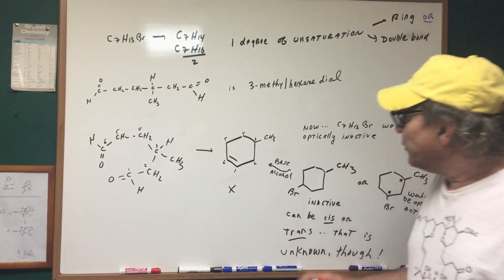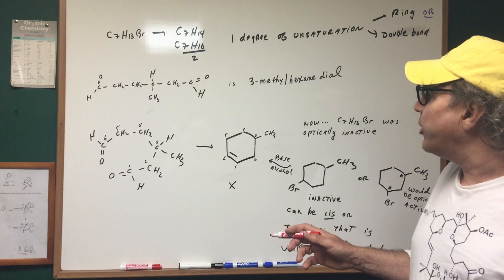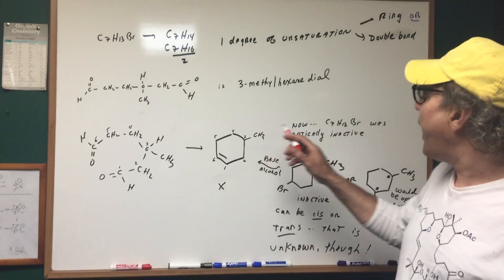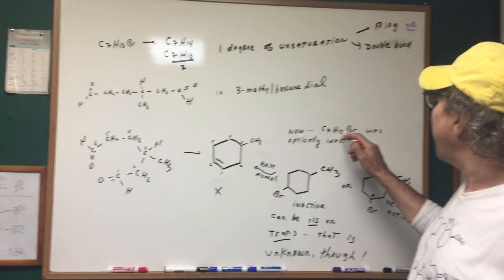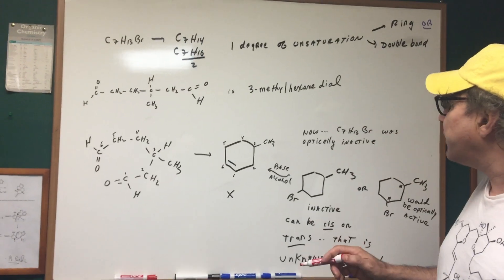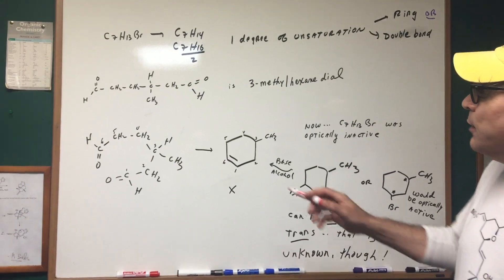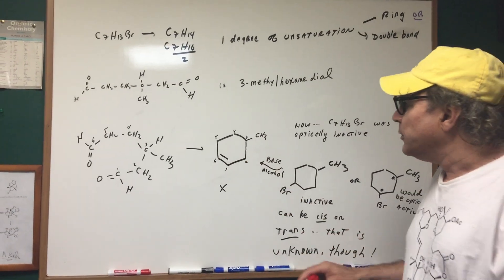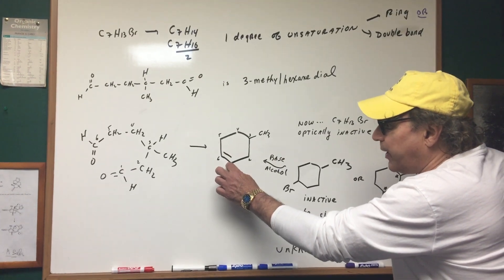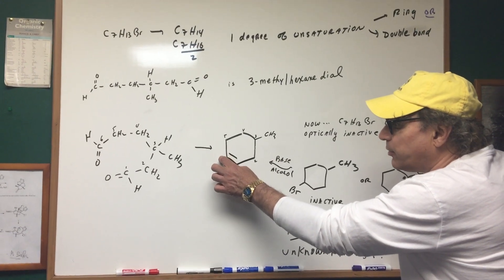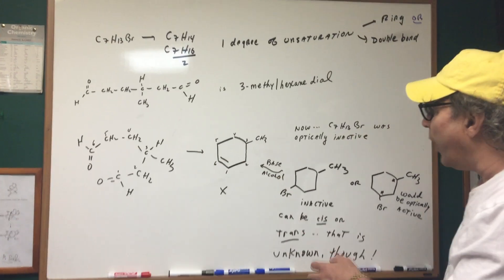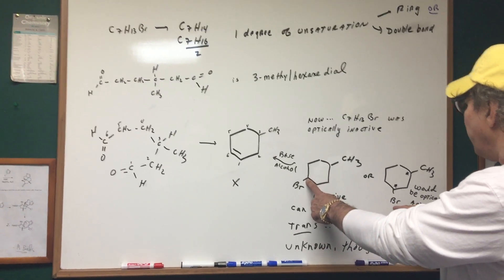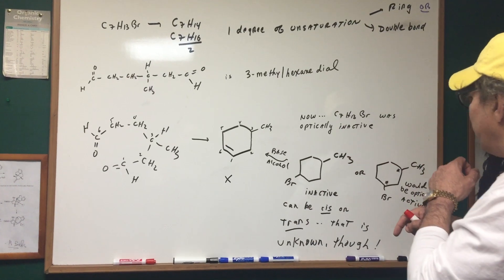Okay. Now, the question is, what was the original? Well, the original compound we know, C7H13Br, was optically inactive. And it contained a bromine. That means that this is missing 1H and 1Br. So the bromine can either be here or the bromine could be here. Well, if the bromine was here, it would look like this. If the bromine was here, it would look like this.